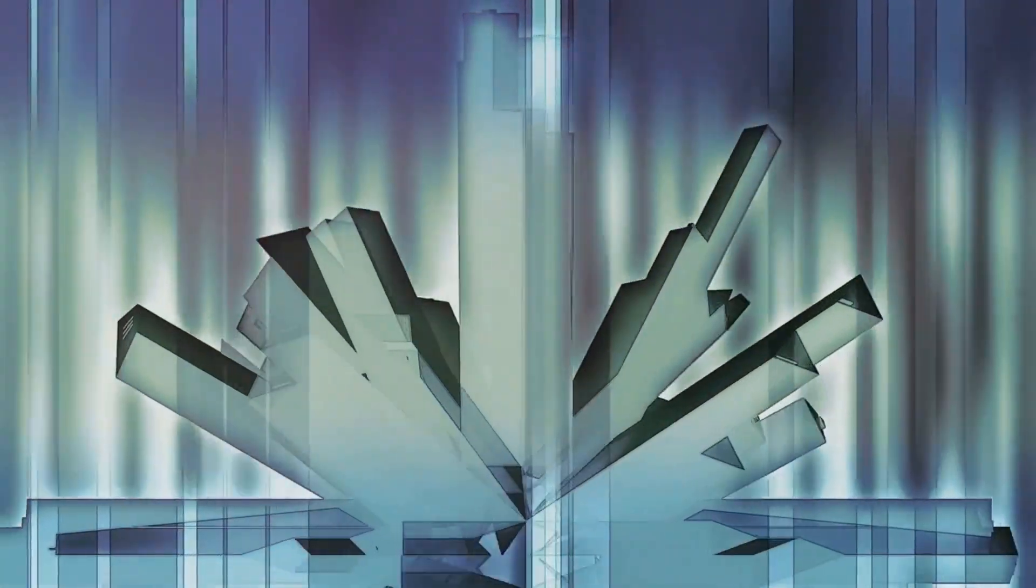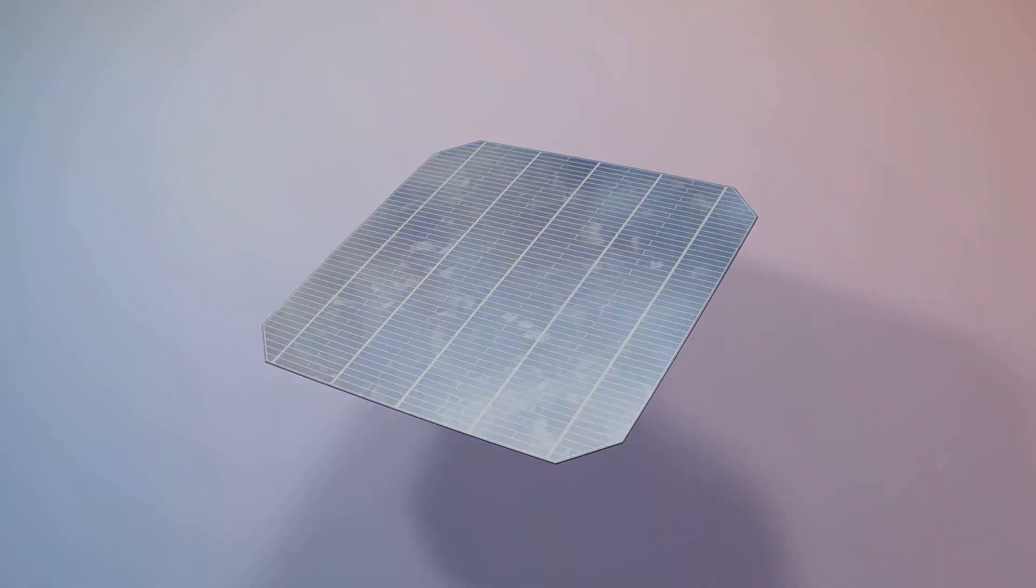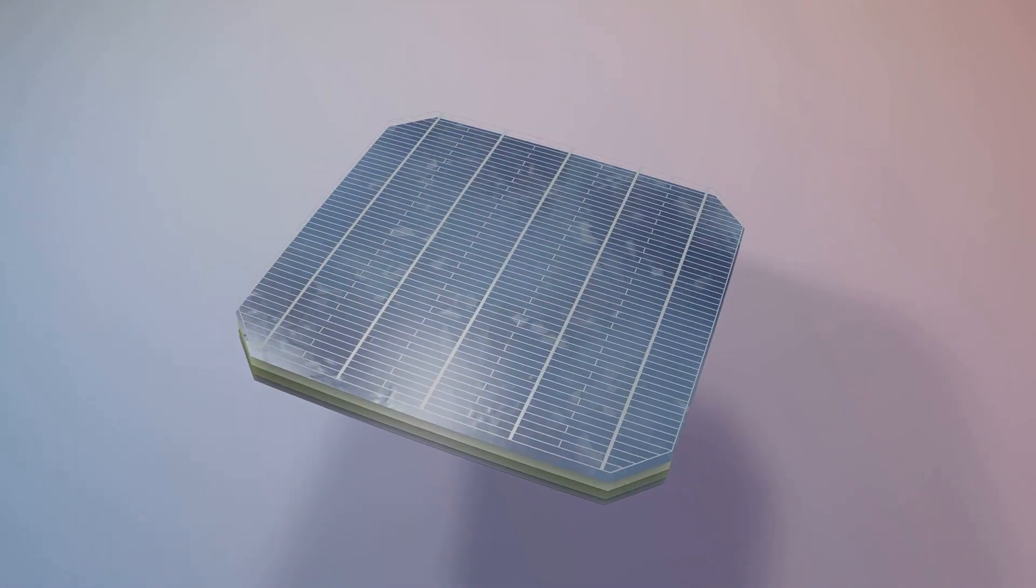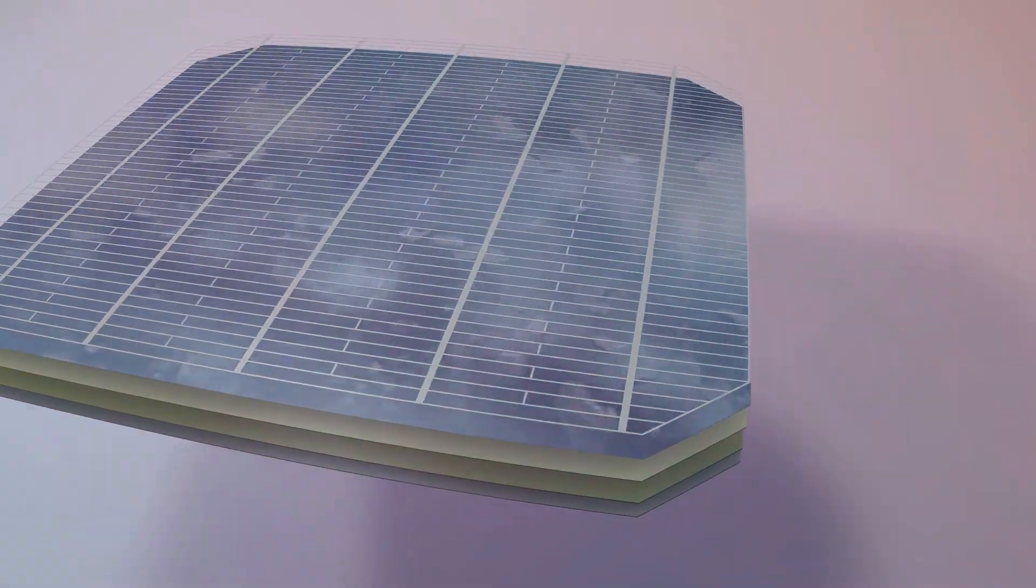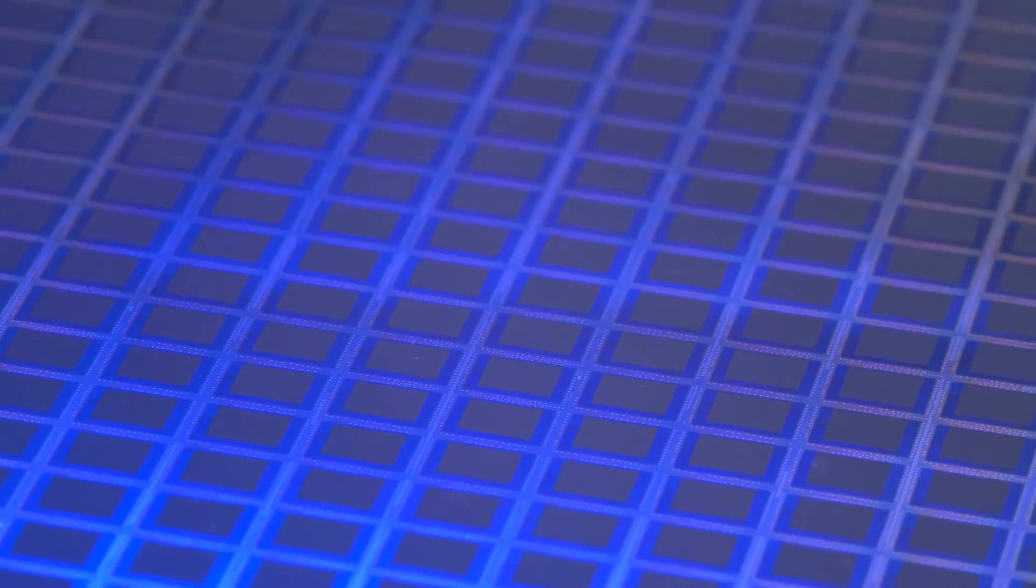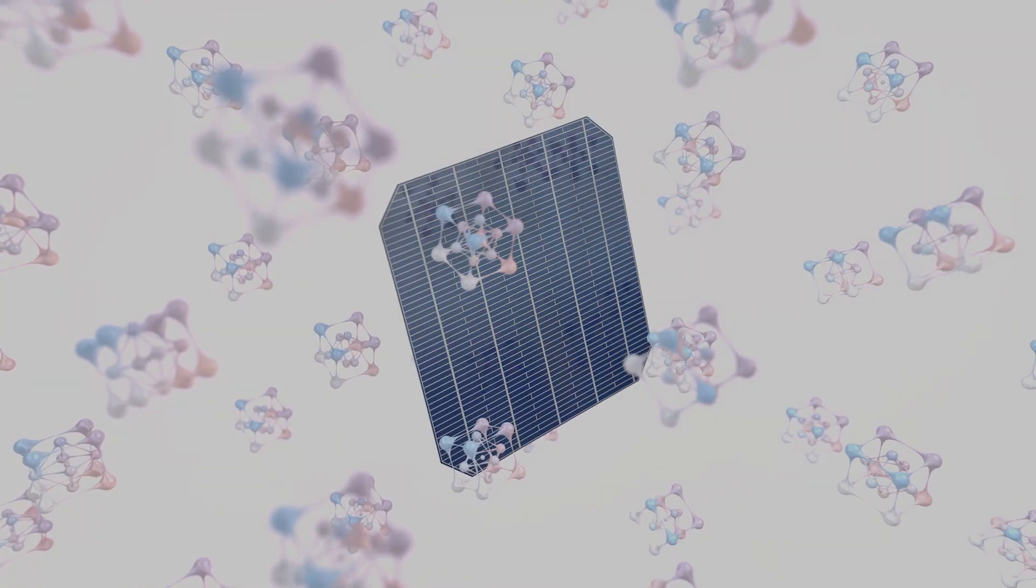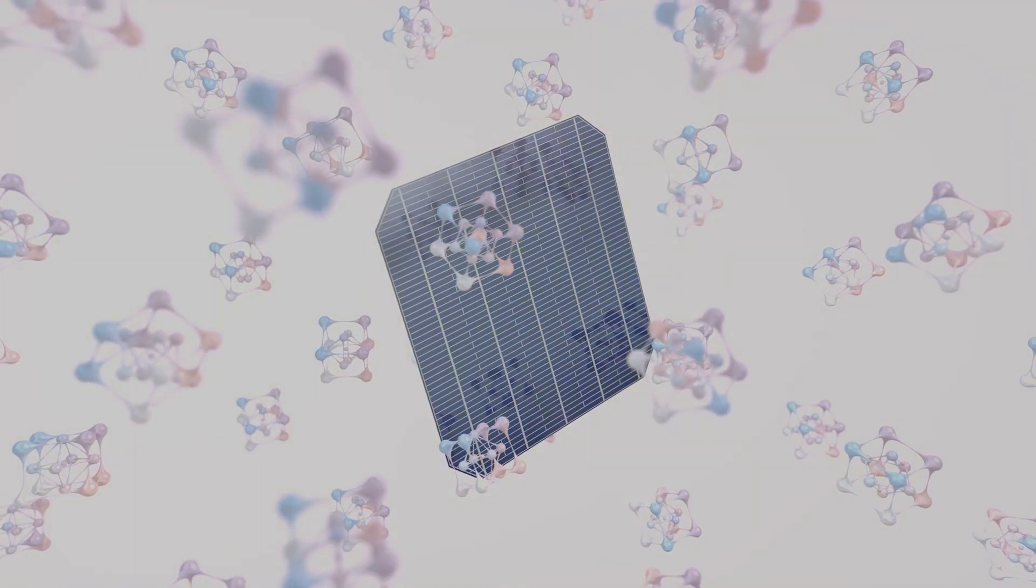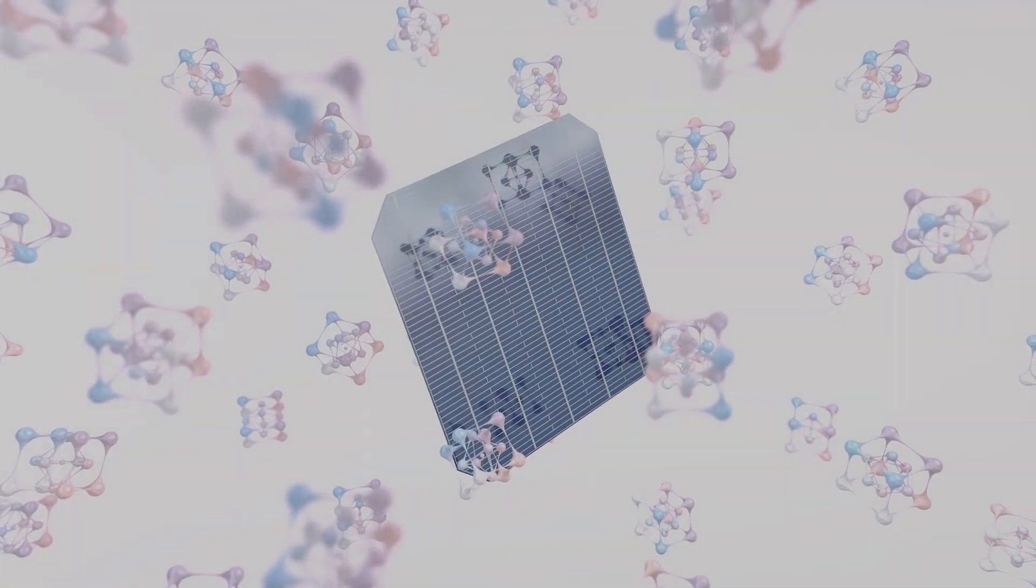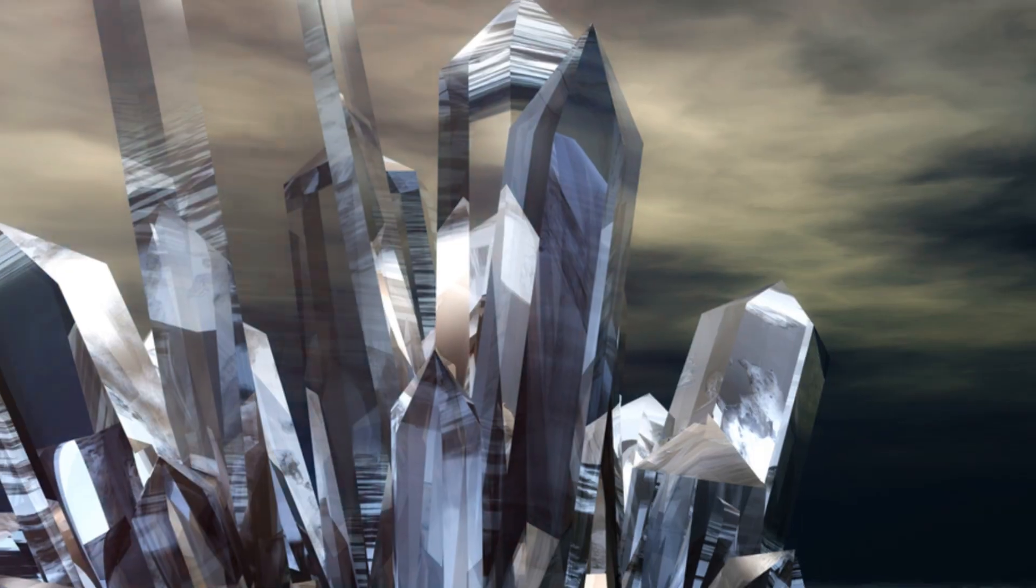Another crucial application of the Czochralski method is in the field of renewable energy, specifically solar cells. High purity single crystal silicon is a preferred material for the manufacture of photovoltaic cells. This silicon offers efficient electrical properties which are necessary for converting sunlight into electricity. The Czochralski method, with its ability to produce large high-quality single crystals, has been instrumental in the growth of the solar energy industry.